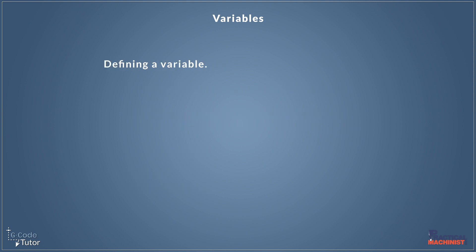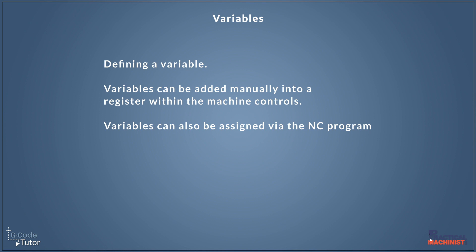So by giving a variable a value, we define it. We tell the variable what it is. And there's a few ways we can go about doing that. So we can add manually into the register of the machine controls to say what a variable is. We have a section on the machine controls, which gives us hash 100, hash 101, et cetera, all the variables listed. And we can assign a value to them in a box next to that variable. But we can also change the value of variables with inside our programs as well. And this is where it becomes very powerful as we can do maths and put the answer inside a variable and then use that variable for parts of our program.